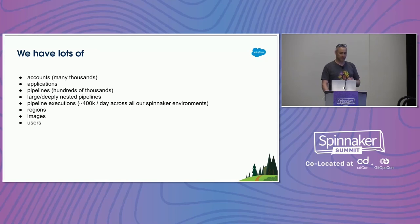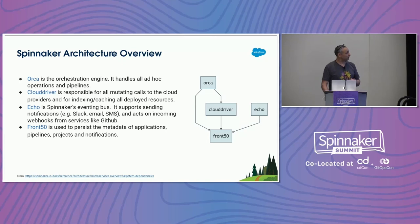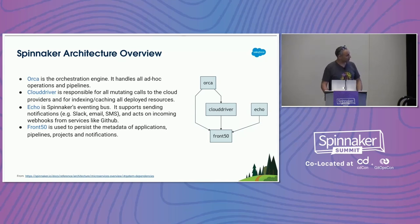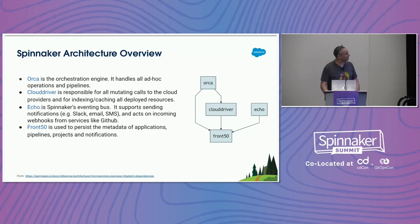I'm going to show a picture of some of the bits of Spinnaker we'll talk about today: Orca, CloudDriver, Echo, and Front50 — the names of Spinnaker microservices. This is copied from a slide on the Spinnaker website. One thing to note: in addition to what it says about Echo — sending notifications and receiving webhooks — it can also receive pub/sub information to trigger pipelines.